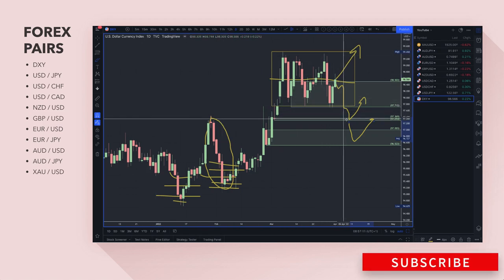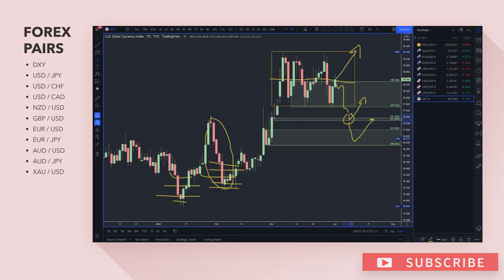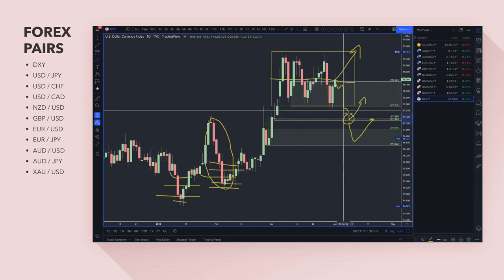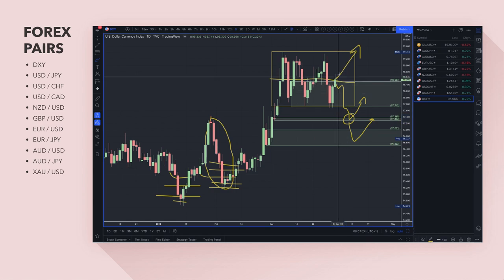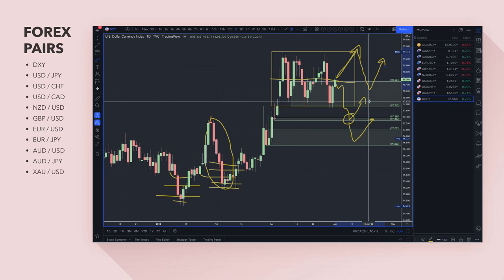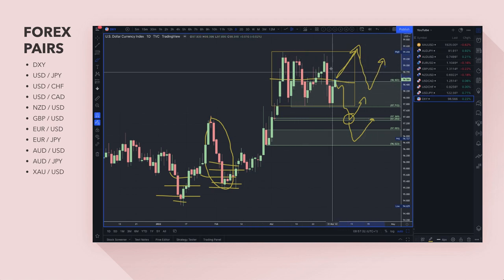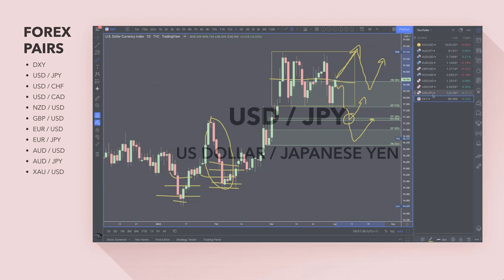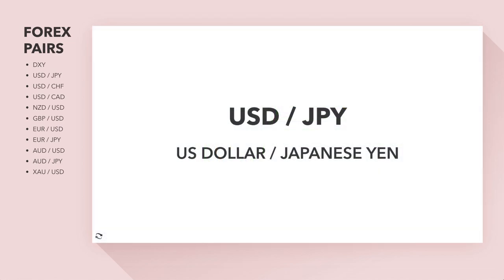Looking at dollar index levels for confluence: if price comes down to the 97 area, the dollar is definitely going to be a bargain down there. I want the dollar to come down — even if it goes higher first, that's fine — then pulls back and allows me to get involved in dollar buying on any of the crosses. That's my bias at the moment for dollar buyers.